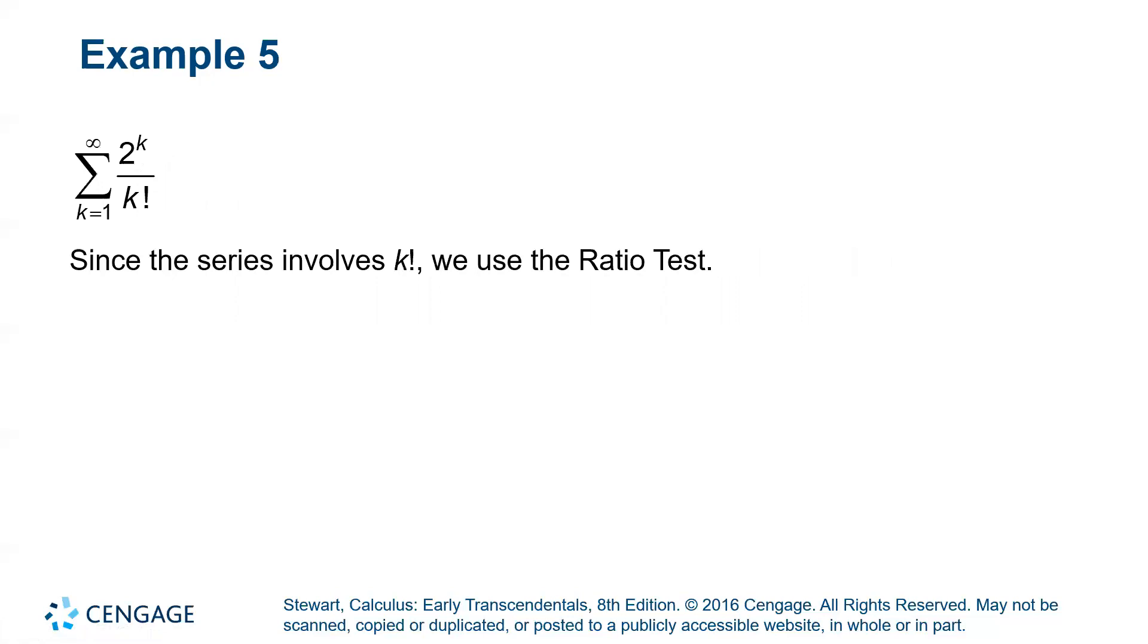Example five, it's two to the k over k factorial. Because we have a factorial in play the ratio test is going to be the best that we learned in the last section because you're going to be able to cancel out almost all of the terms of the factorial. Remember this means k times k minus one times k minus two and so on. So when you set up the ratio you'll have quite a bit of cancellation happening there and you should be able to find the limit with the ratio test.